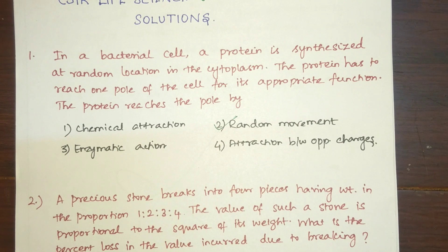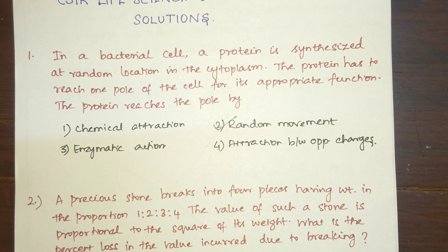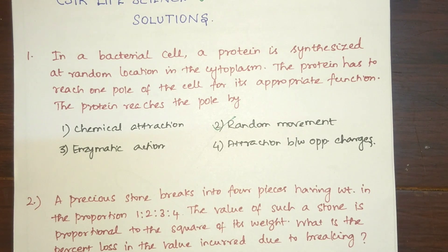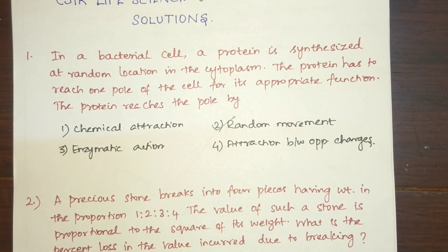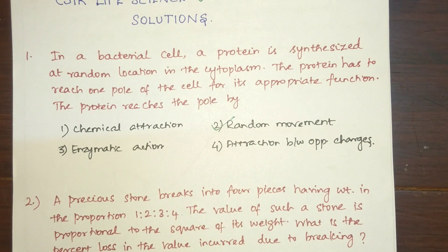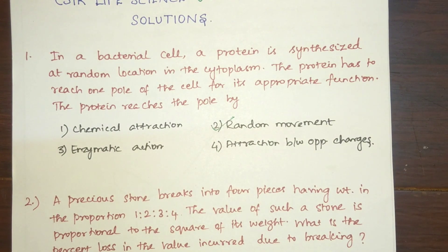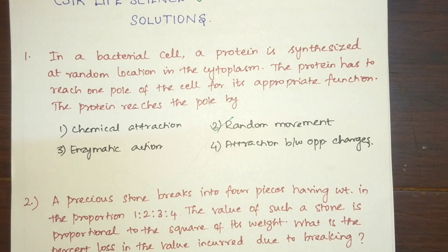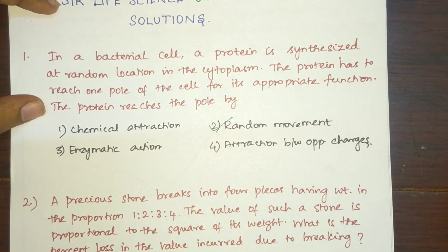Alternatively, the ribosome that is scattered is brought to the translocon with the help of a specific signal sequence, and then the protein is synthesized. So in cases where the protein is synthesized at the membrane, or otherwise it reaches the appropriate organelles through random movement. Therefore, option two is the right answer.